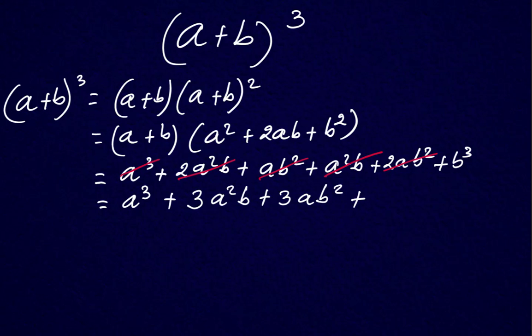Plus b cubed. Now we've counted everything. So we have ourselves a formula. If you have a question regarding a plus b cubed, this is the way to go about it: a cubed plus 3a squared b plus 3ab squared plus b cubed.